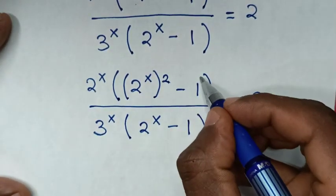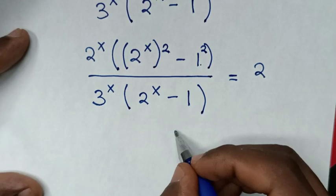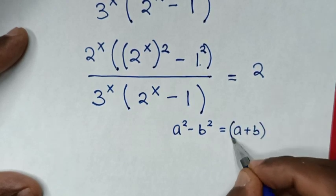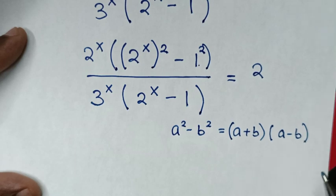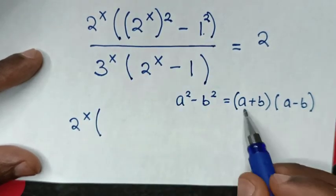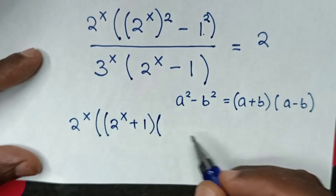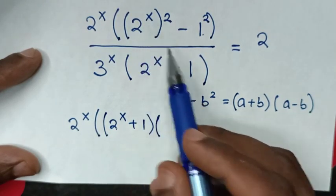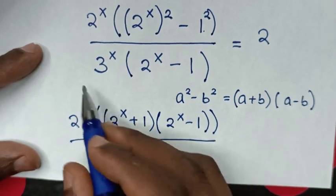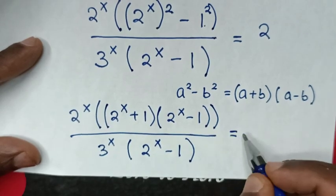Since 1 can be written as 1², the expression 2^(2x) minus 1 is indeed in the form a² minus b², so we apply a² minus b² equals (a+b)(a−b), giving (2^x plus 1)(2^x minus 1). The equation becomes: 2^x times (2^x plus 1)(2^x minus 1) over 3^x times (2^x minus 1), equals 2.